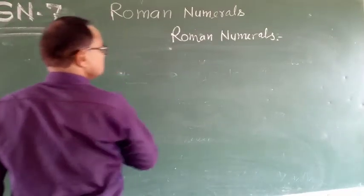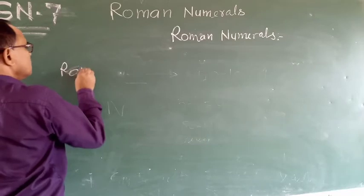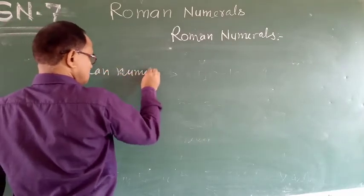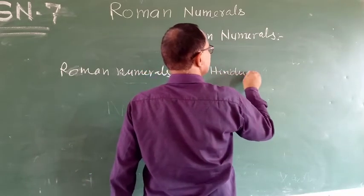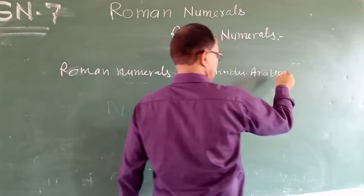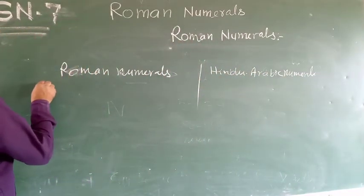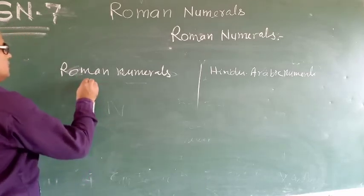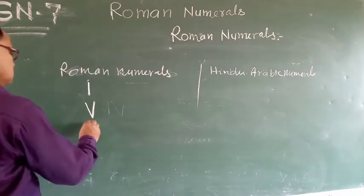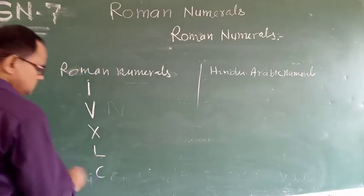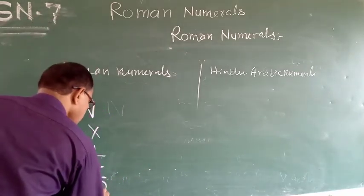Here are the Roman numerals and their Hindu-Arabic numeral form. The Roman numerals are: I, V, X, L, C, D, and M.